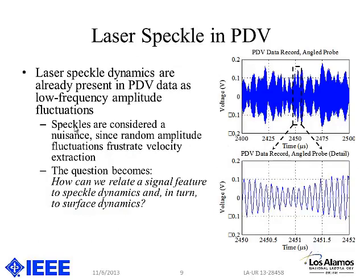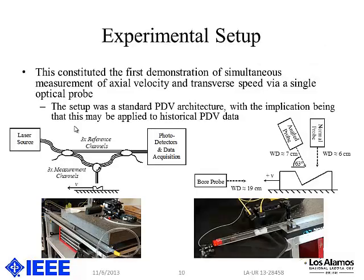Typical PDV data looks something like this. Because our photo detectors have high-pass filters and don't measure DC, the signal is centered around zero. Zooming in on voltage as a function of time you can see the frequency associated with the Doppler shift, but zooming out you see low-frequency fluctuations caused by speckle — literally a bright speckle or a couple of bright speckles dominating your signal, with the signal disappearing completely in some regions. That's a challenge for extracting velocity information, but there is real information buried in it.